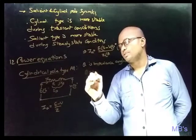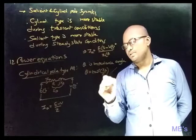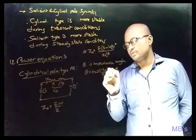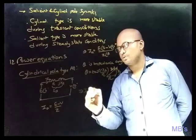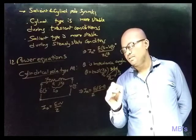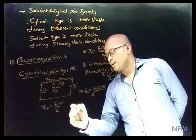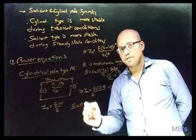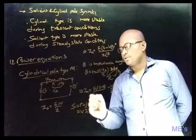The impedance angle θ equals tan⁻¹(Xs/r). If r is the resistance and Xs is the reactance, then IA equals (E/Z) at angle (δ − θ) minus (V/Z) at angle (−θ). The apparent power equals V times IA* (conjugate), so the complex power P + jQ equals V × IA*.